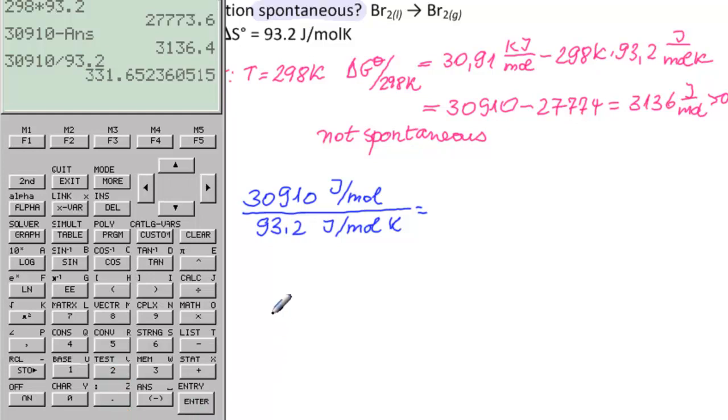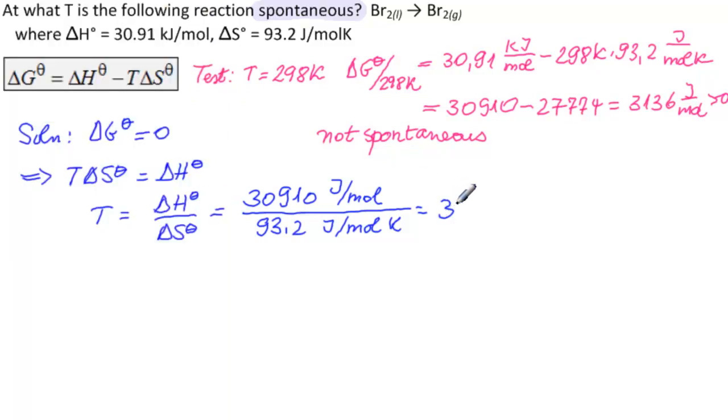So 331.7 Kelvin. So at 298 it was not spontaneous; at 331.7, ΔG° becomes zero.